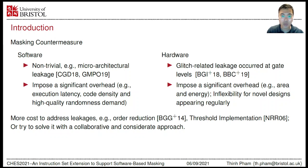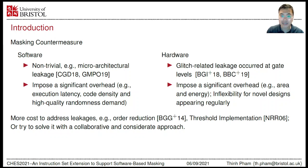Implementing hardware-based masking faces difficulties in mitigating glitch-related leakage at the gate level. Masking also imposes large overheads in terms of area and energy consumption. Moreover, hardware-based masking is inflexible for novel designs appearing regularly. We can pay more costs to address the leakage, like order reduction or correction implementation. Such approaches employ additional random values to maintain guaranteed security level. For example, correction implementation uses three instead of two shares for first-order masking.